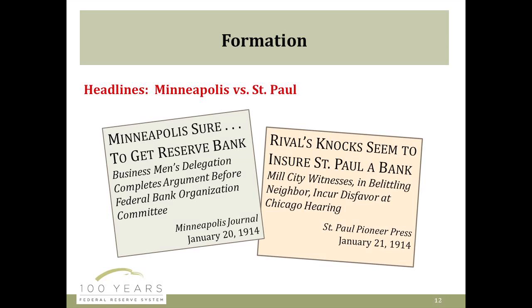The hearing was pretty contentious. People thought Minneapolis made a pretty big slip up because they attacked St. Paul's economic vitality, and Minneapolis was chastised by the committee for it. During the hearing, Minneapolis indicated that if they couldn't have the regional bank, they'd be fine with Chicago having it. St. Paul, on the other hand, showed more of a sense of citizenship, saying if they didn't get it, they'd be okay with Minneapolis getting it. Ultimately, the Minneapolis Reserve Bank — the Federal Reserve Bank for the upper Midwest — was sited here in Minneapolis.